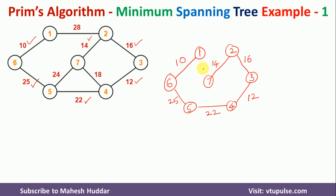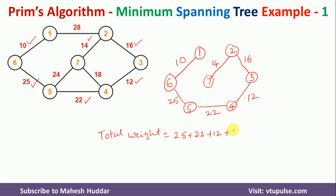This is the minimum spanning tree for this graph. Next, we calculate the total weight: 25 + 22 + 12 + 16 + 14 + 10 = 99 units.